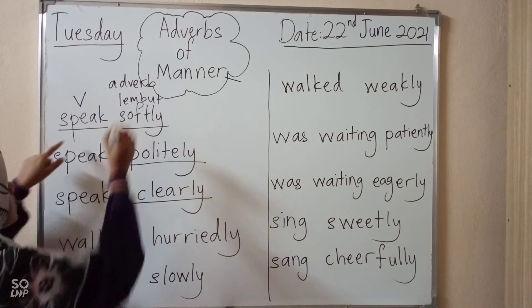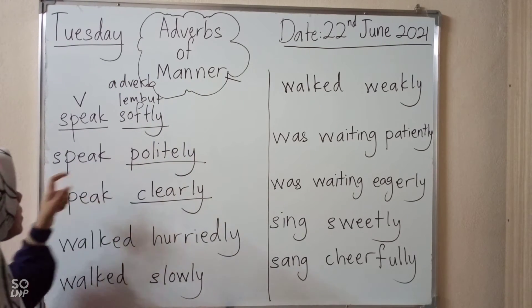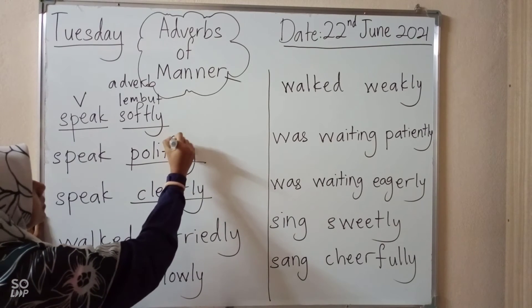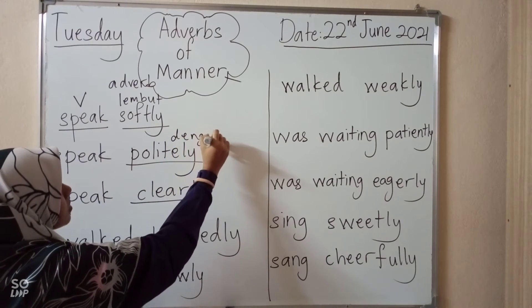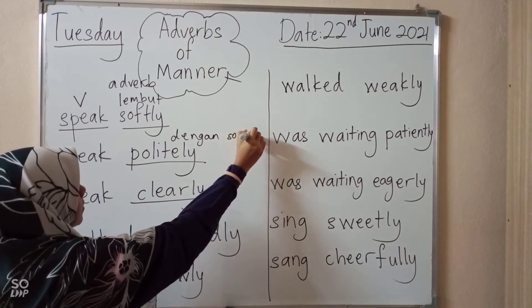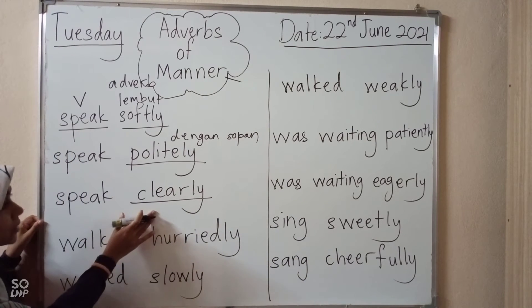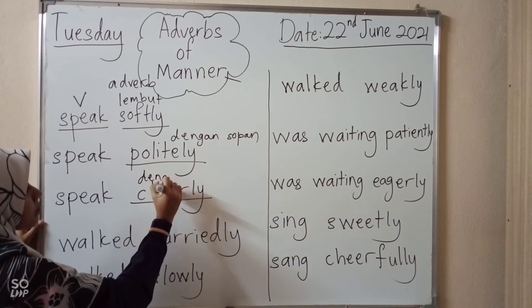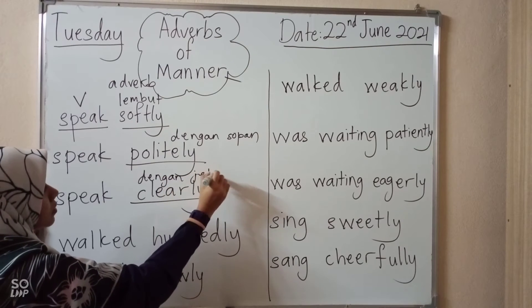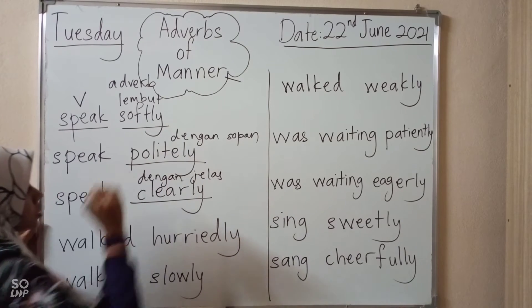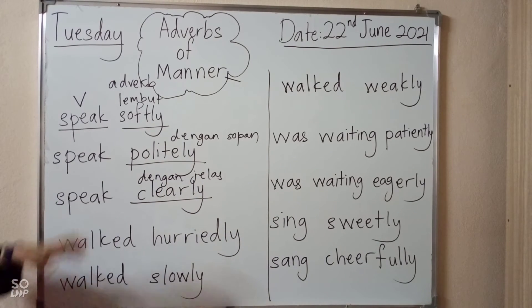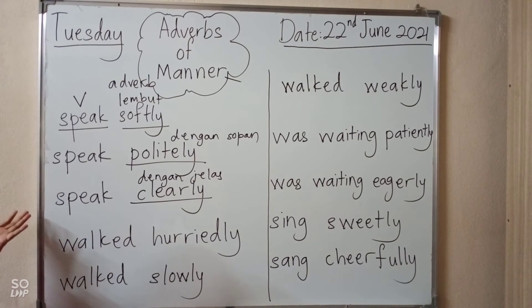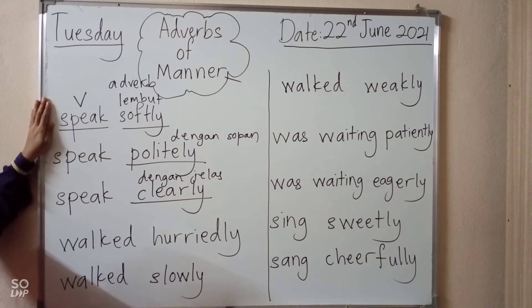The adverbs to describe the verb 'speak' are: speak softly — dengan lembut; speak politely — dengan sopan; speak clearly — dengan jelas. So can you see there are three adverbs to describe the verb 'speak.'